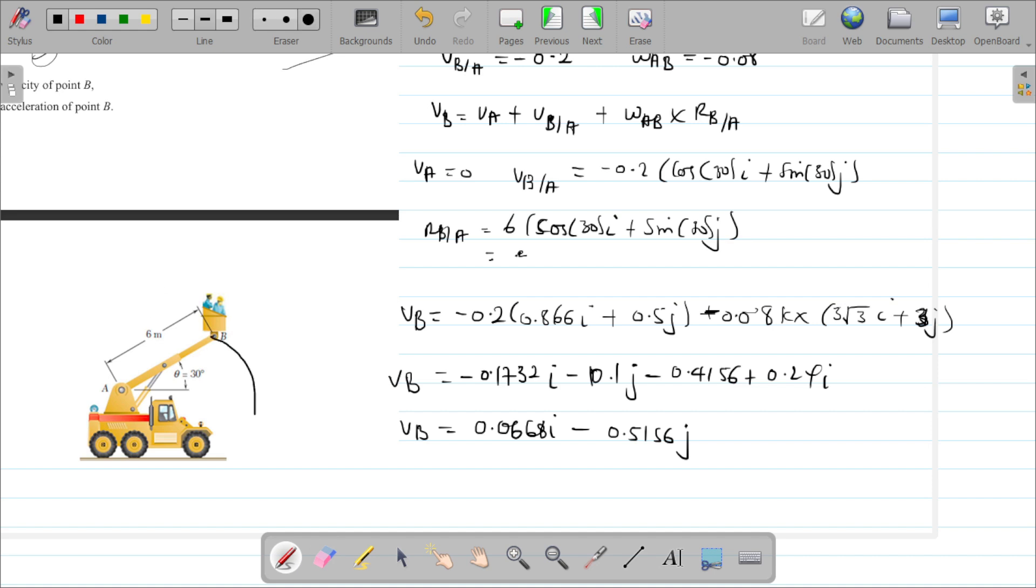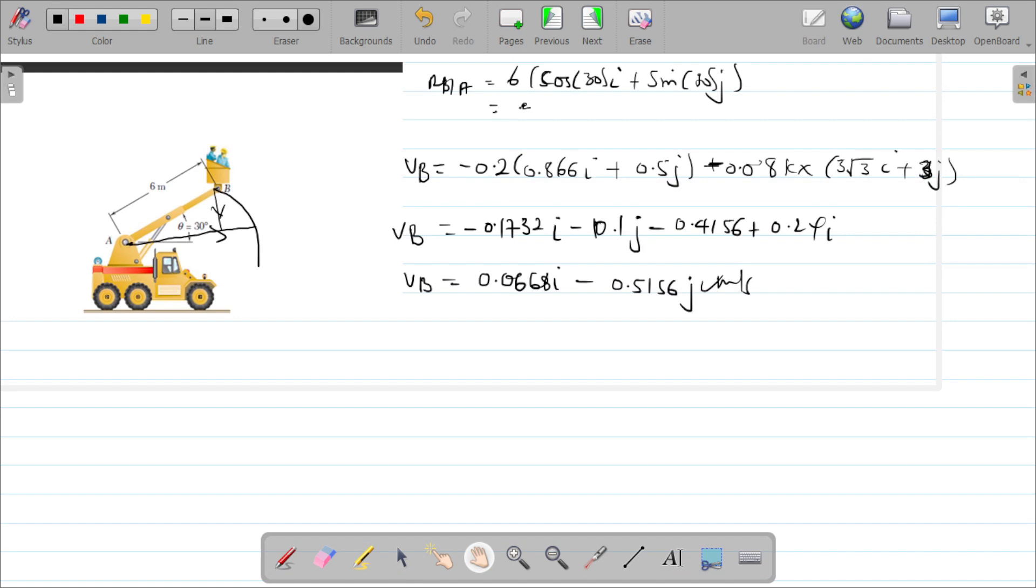If we're rotating like this on our graph, here it's positive and the y-axis goes down in the negative direction, which makes sense. The velocity is in meters per second. Now we can find the magnitude and direction. v_B equals square root of 0.0668 squared plus 0.5156 squared, which equals 0.5199 meters per second.